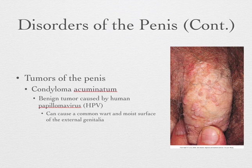Condyloma typically presents with what you'll hear described as a cauliflower-like appearance — they cluster and look like little cauliflower-type growths. This is external genital warts essentially, caused from HPV.